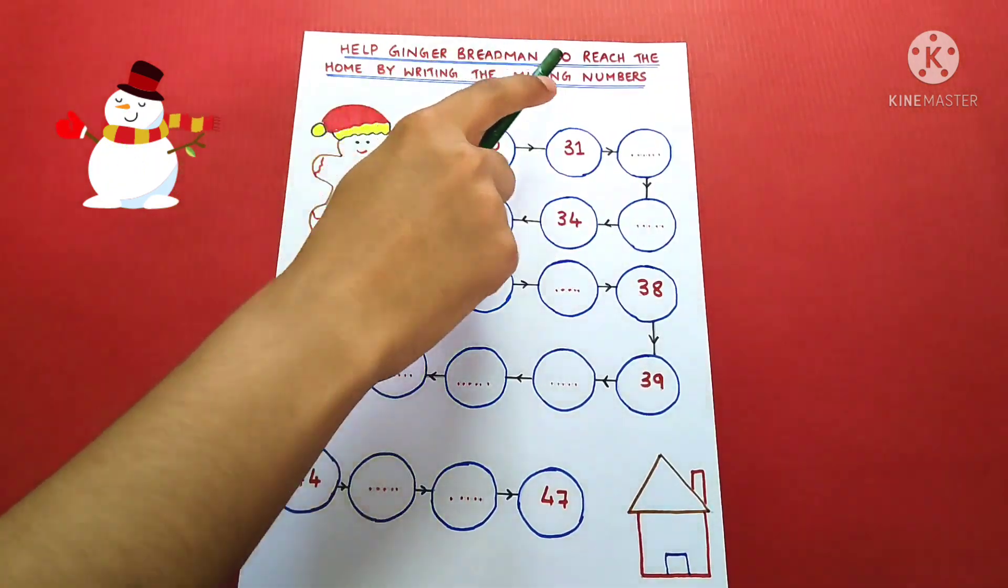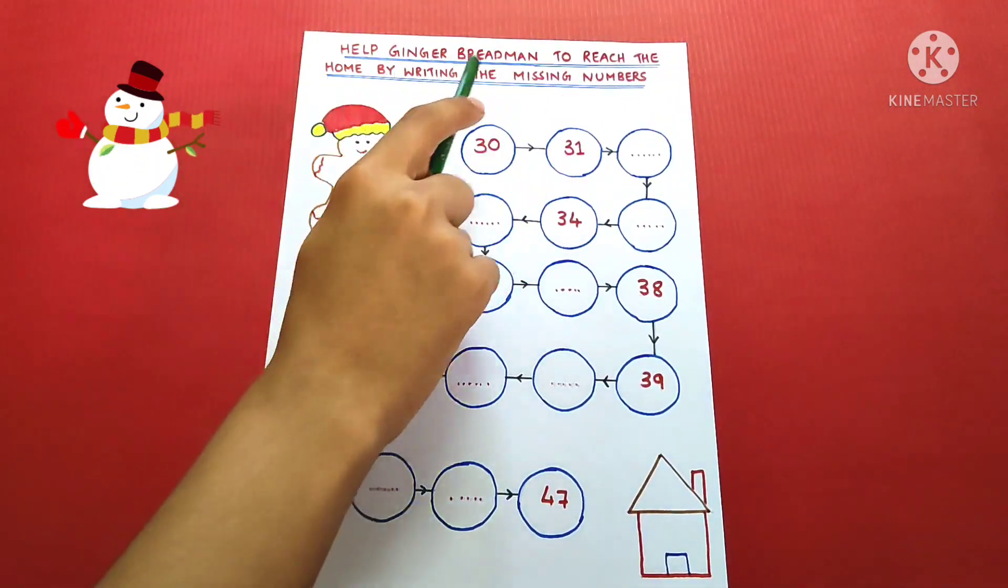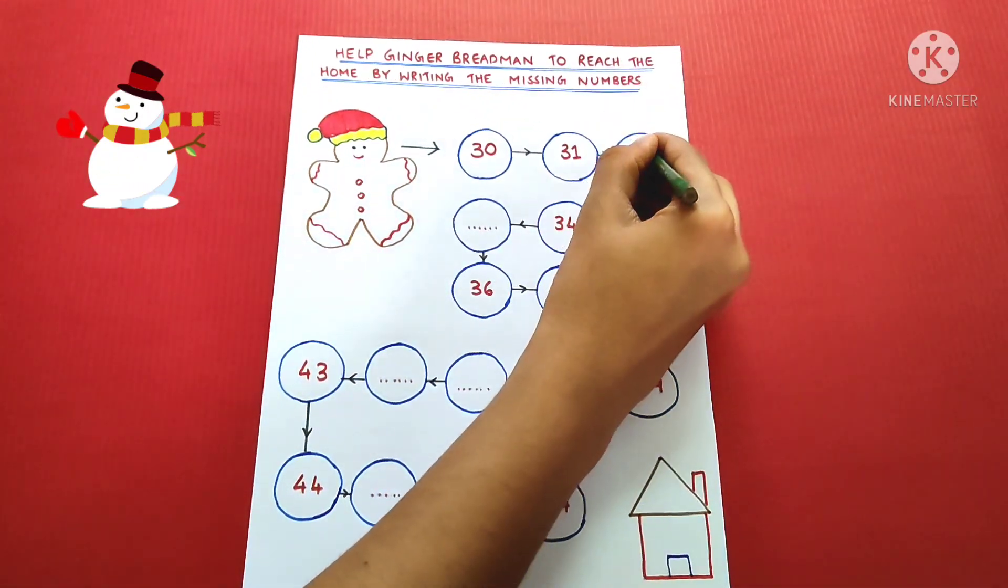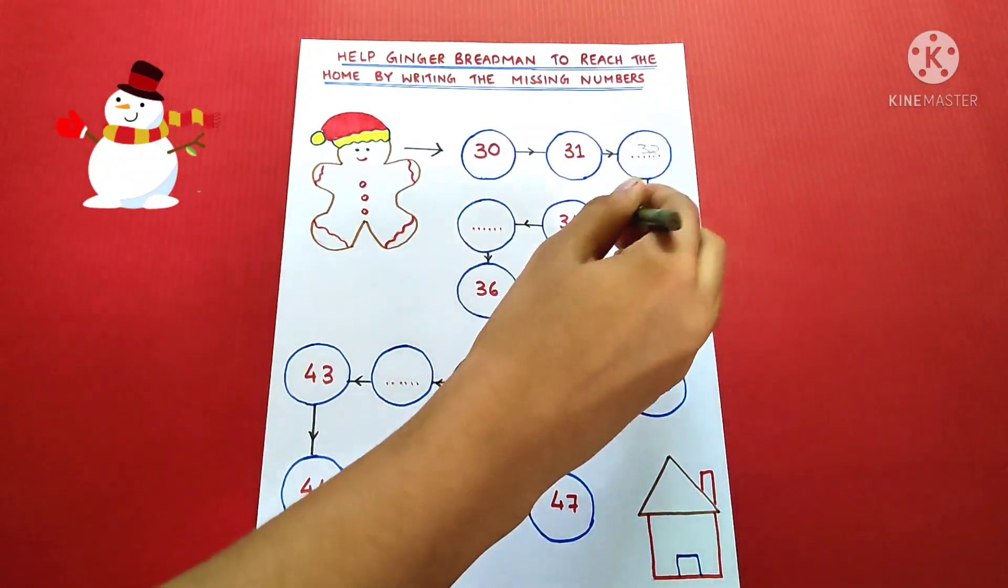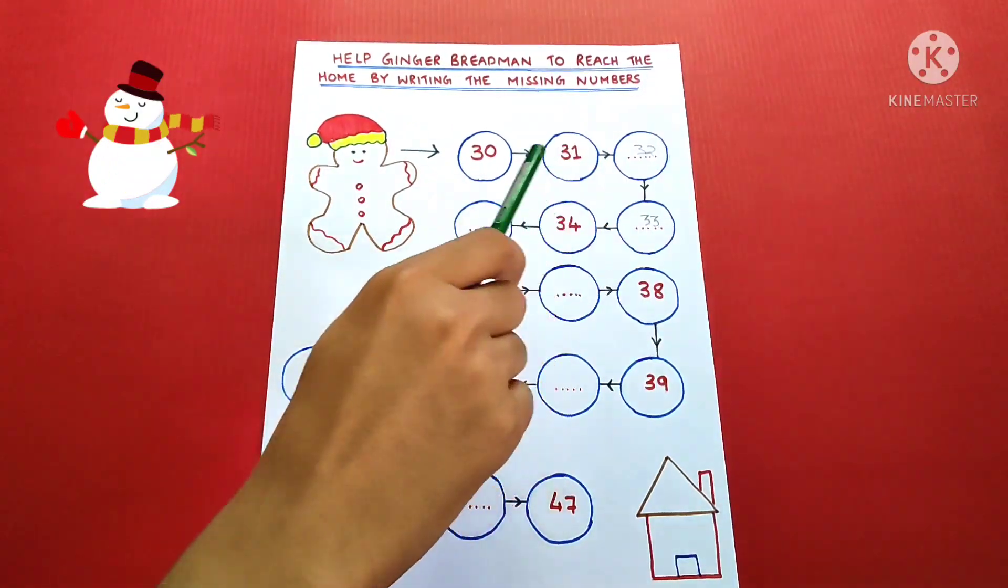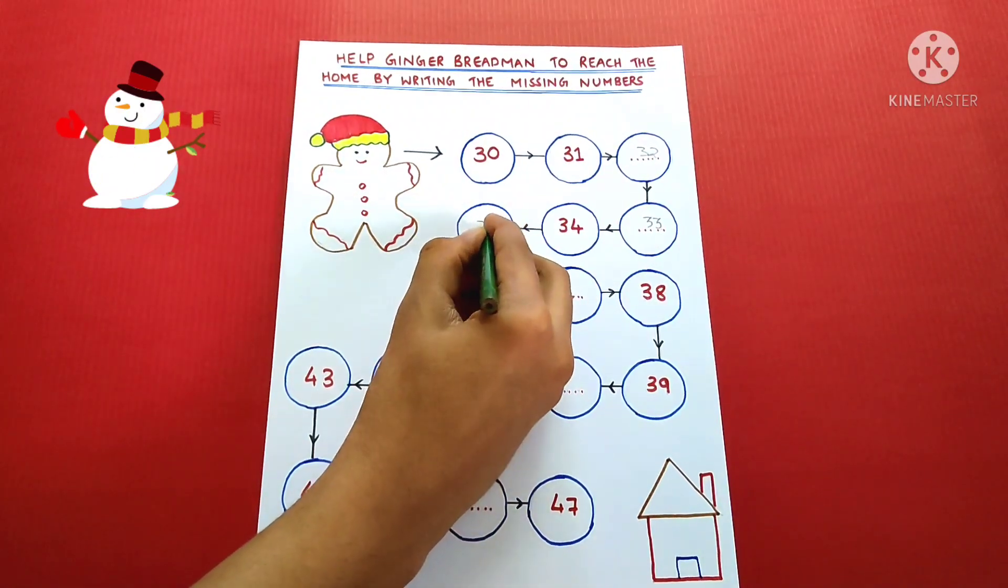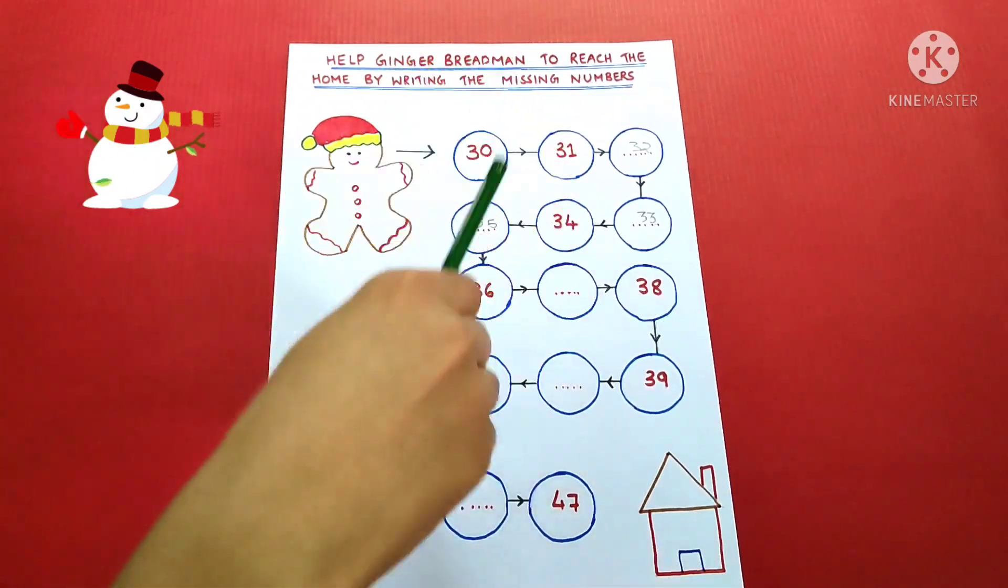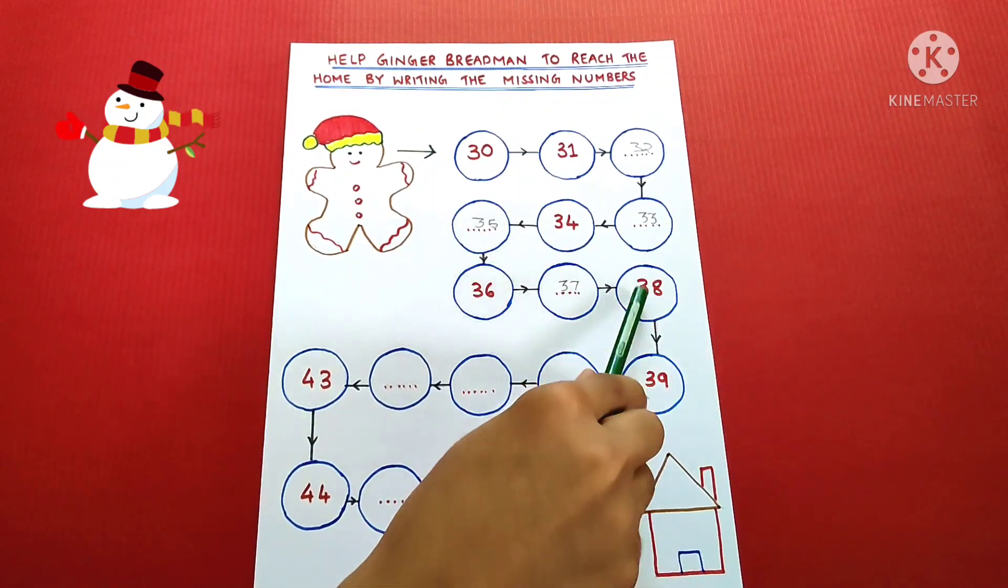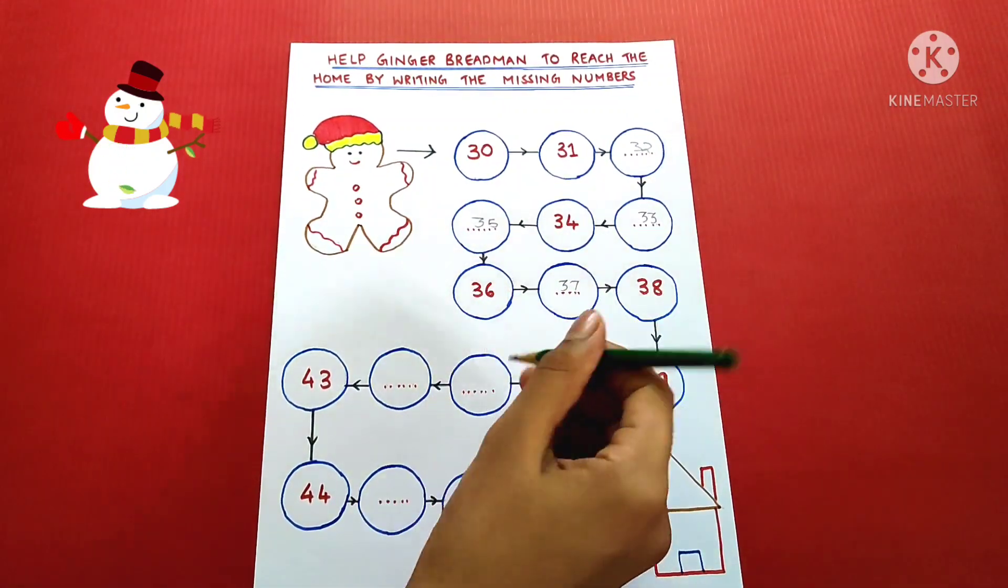Help gingerbread man to reach the home by writing the missing numbers. 30, 31, 32, 33, 34, 35, 36, 37, 38, 39, 40.